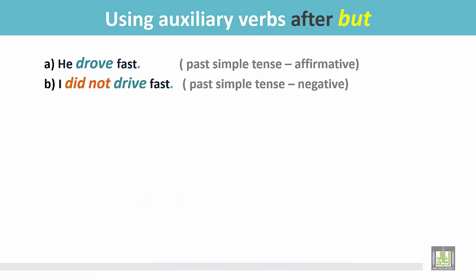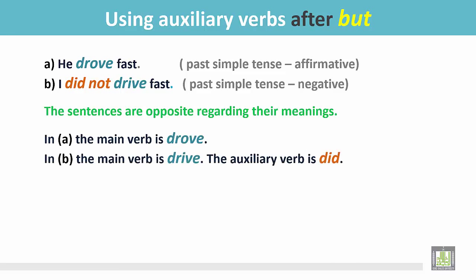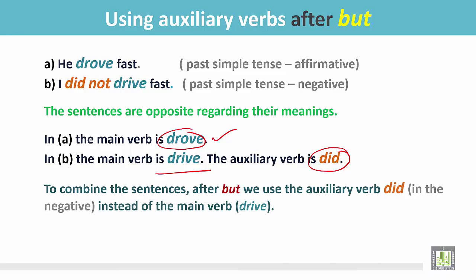There are two other examples in the past form. 'He drove fast.' 'I did not drive fast.' The first one is affirmative in the past simple and the second one is past simple negative. The sentences are giving opposite meaning. Both sentences have two different main verbs — the first is 'drove' and the second is 'drive'. For the second one we have to use 'did' as an auxiliary verb because it is in the past tense. To combine these two sentences after 'but', we use the auxiliary verb 'did', and since it is negative, it should be 'did not' instead of the main verb 'drive'.